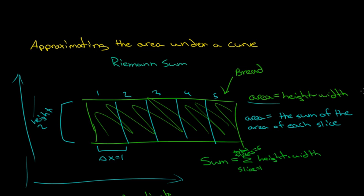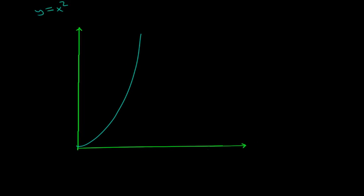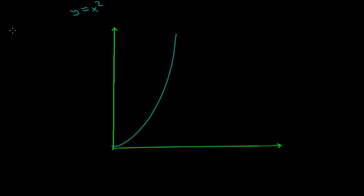We'll see how well this bread analogy translates into an actual function. Calculating the area under a real function using a Riemann sum is still pretty straightforward — there are just a couple things to keep in mind. We need a function, say y equals x squared, which will look something like this. And because we're calculating a definite area, we also need a definite interval, going from a to b. In this case we'll have the interval equal 0 to 2, so a equals 0, b equals 2.